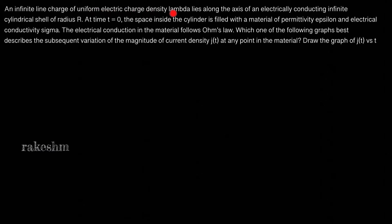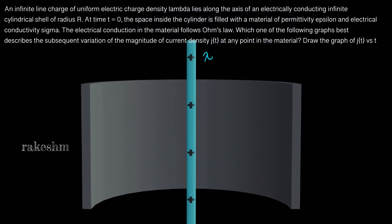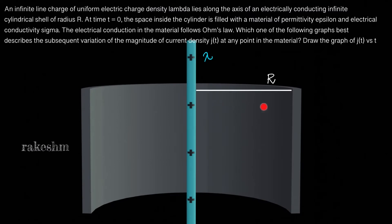So there is an infinite line charge of charge density lambda. I have drawn it finite here. This is an infinite line charge of charge density lambda, and it is present at the axis of a cylindrical shell of radius capital R. This is an infinite cylindrical shell of radius R — I have only drawn it finite.